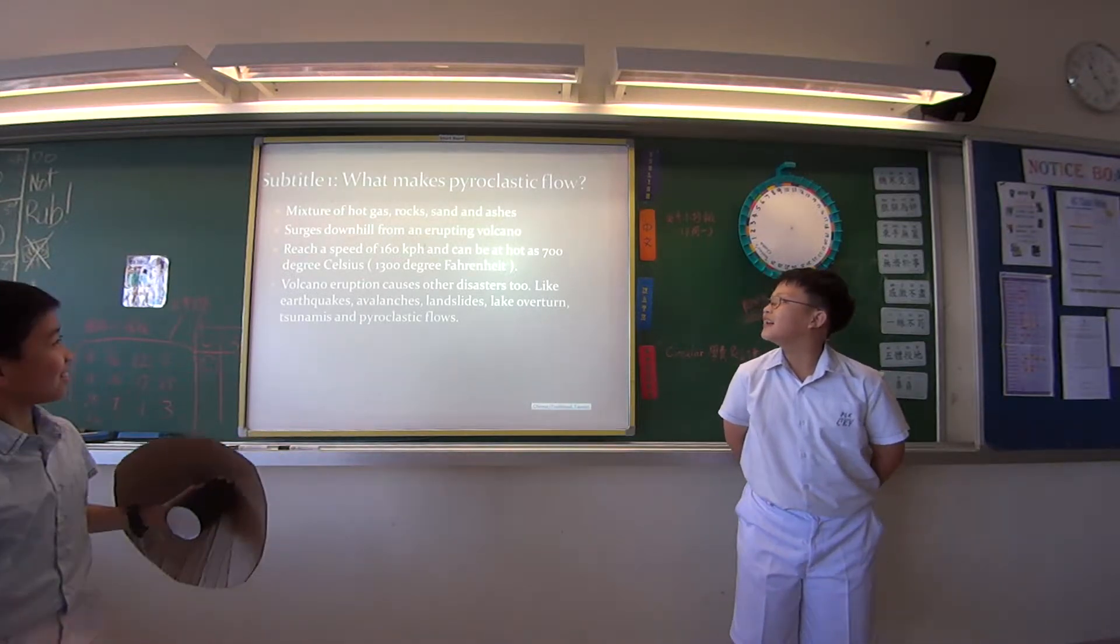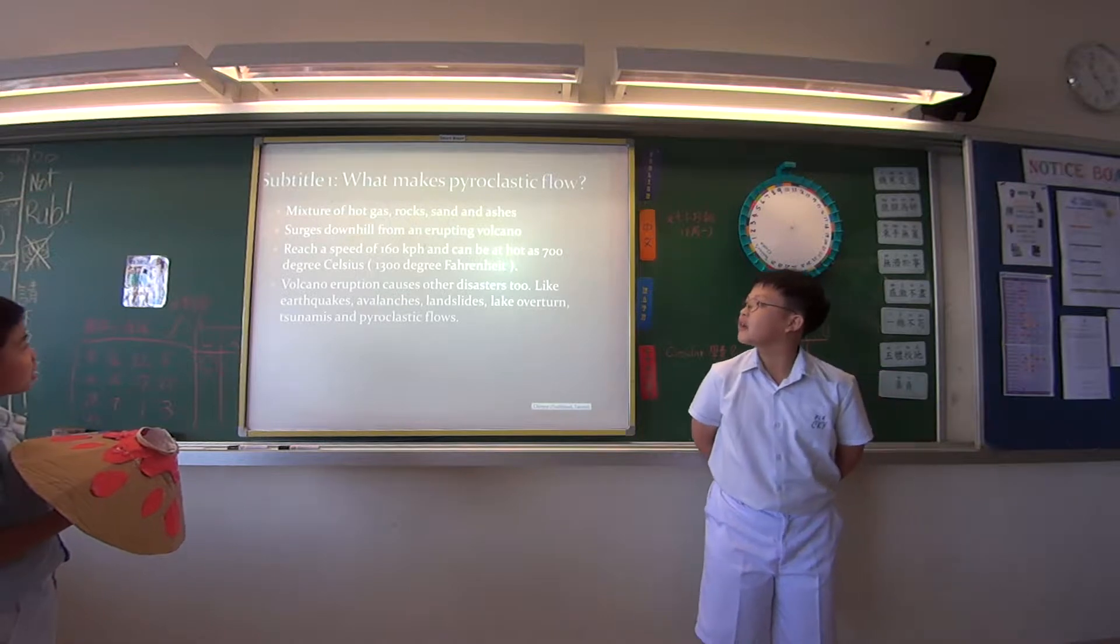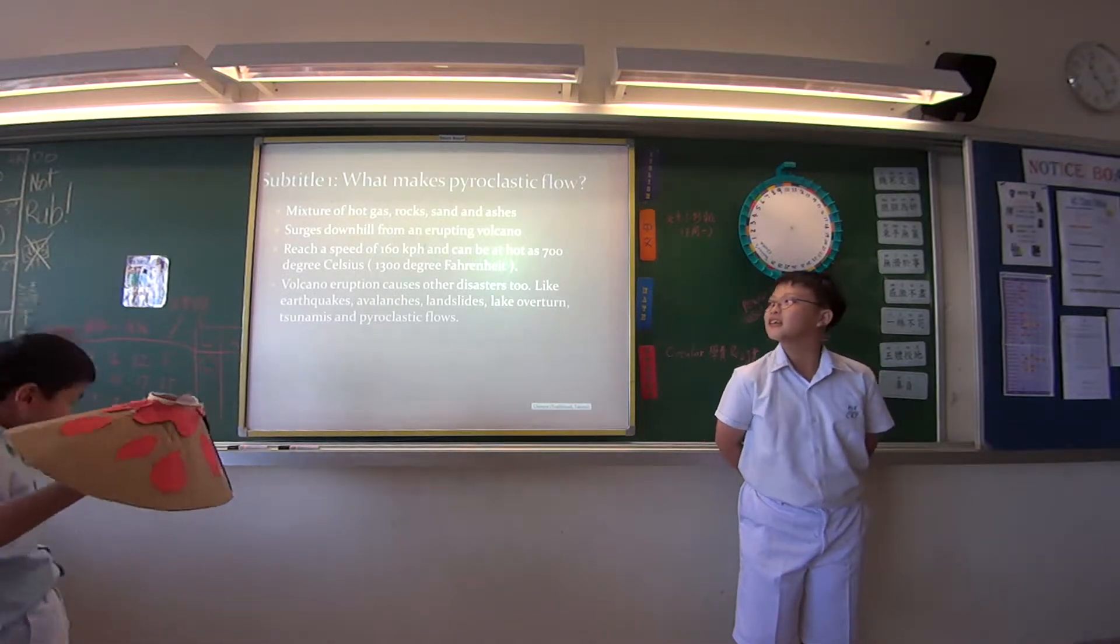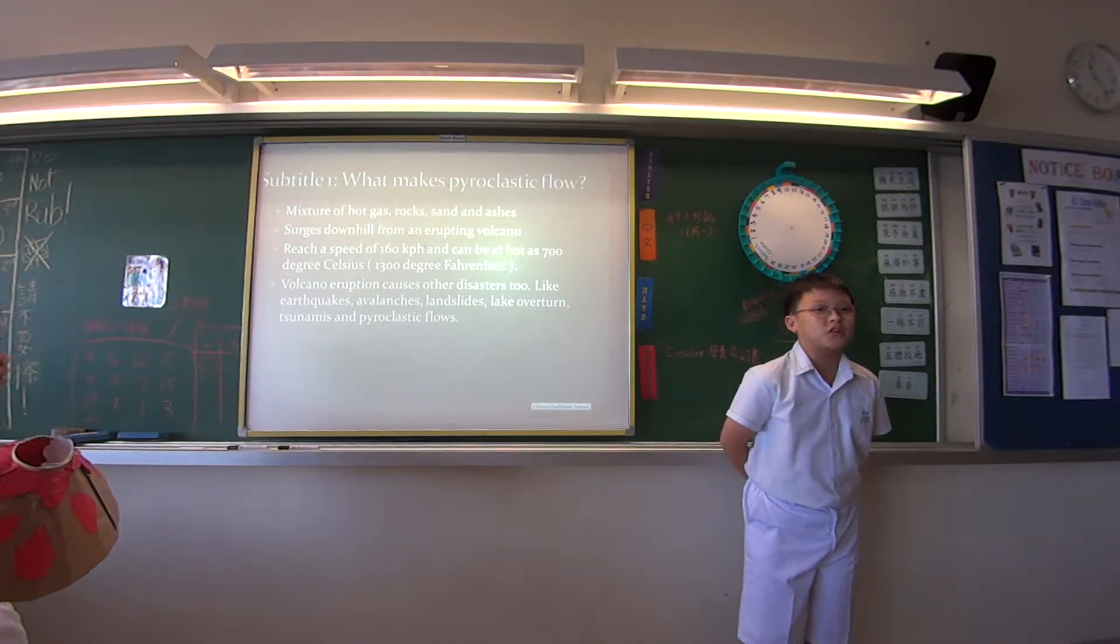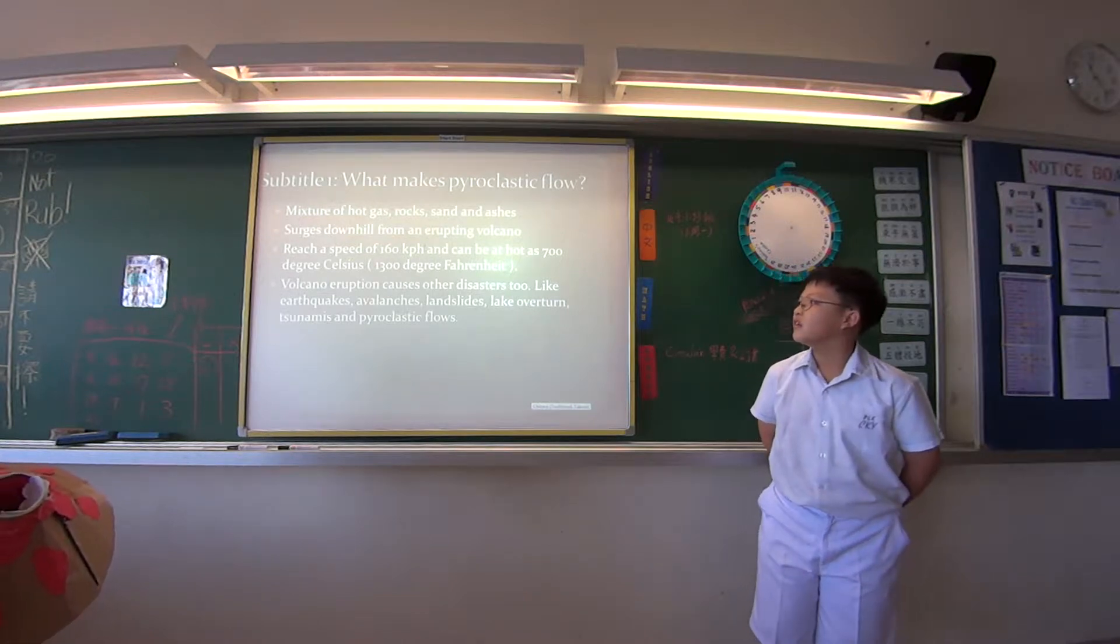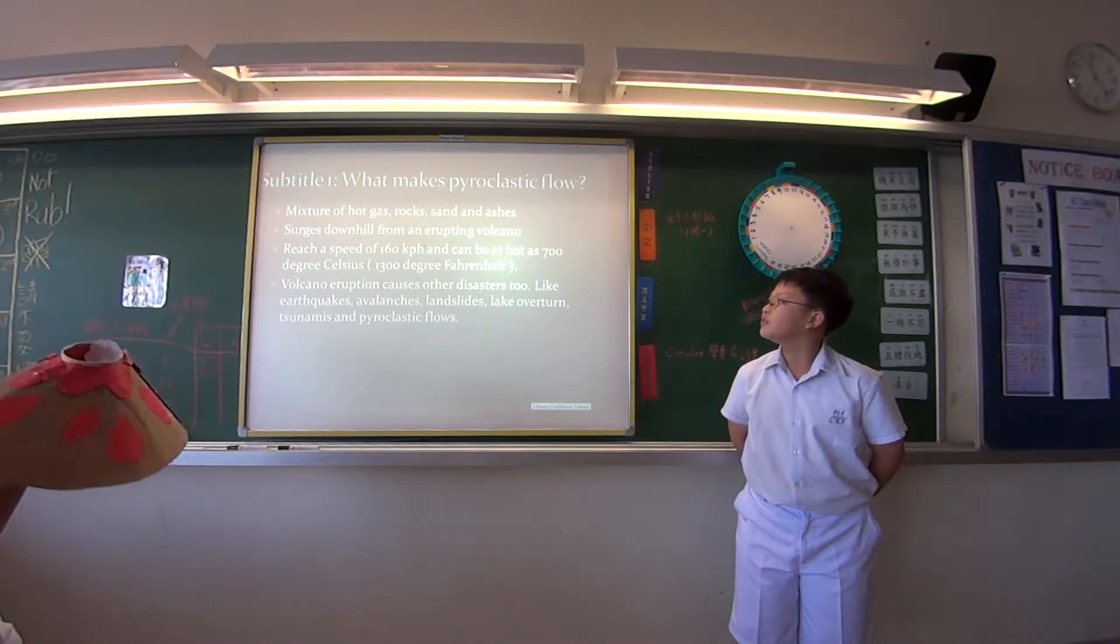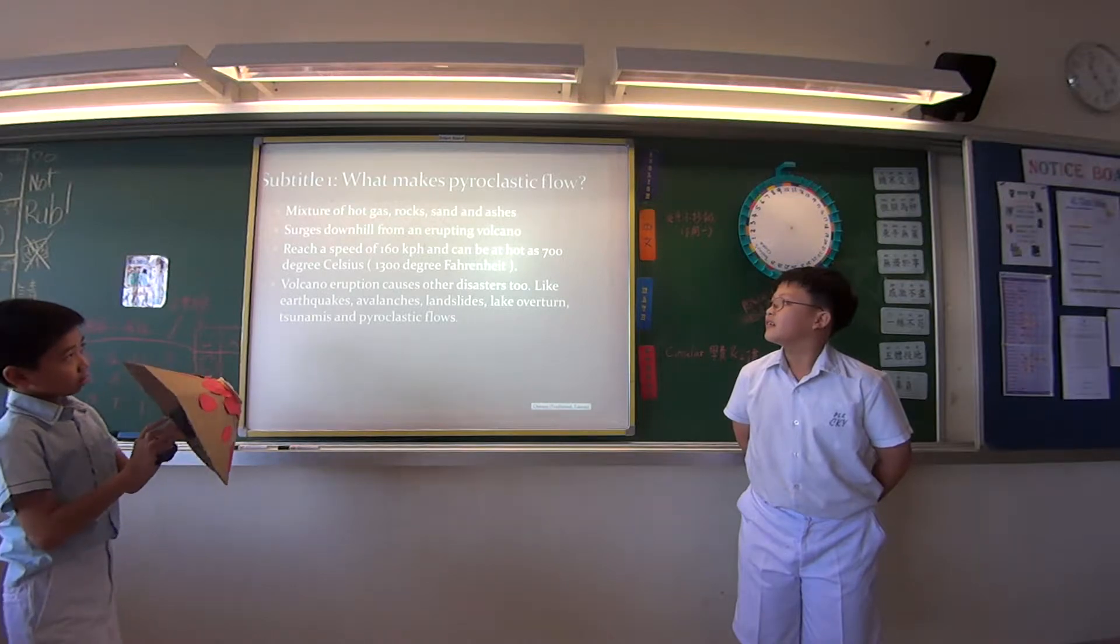And can be as hot, that means a temperature at 700 degrees Celsius. It means like three times hotter than a hot oven. That means 1,300 degrees Fahrenheit.